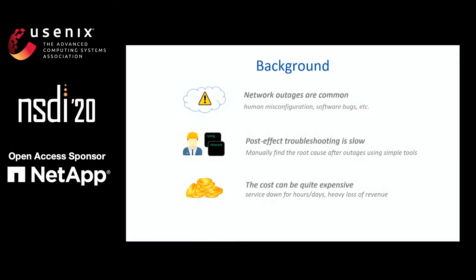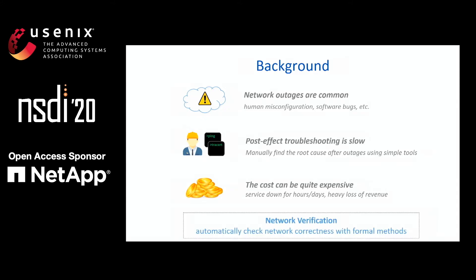The background is that outages are occurring in our networks, and debugging the root causes after outages happen may take a long time, which can be very costly. A better approach is to prevent outages by ensuring network correctness. Network verification provides a set of formal methods that can be used to automatically check network correctness.